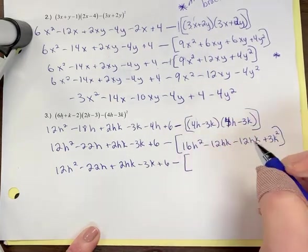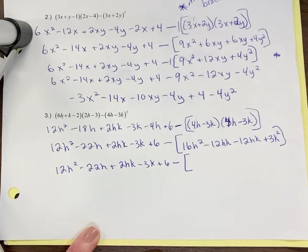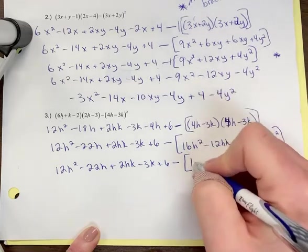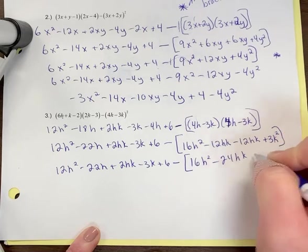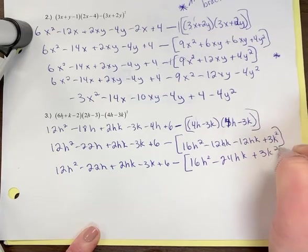Next thing is I'm going to combine like terms. Now, if you brought the negative sign through first, then combine like terms, that's fine. I find it just a little more manageable. We're so used to foiling and combining like terms. So I usually do it here. Negative 12hk and negative 12hk combines, plus 3k squared still.